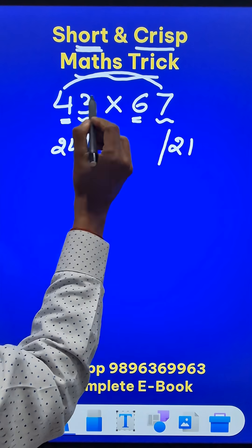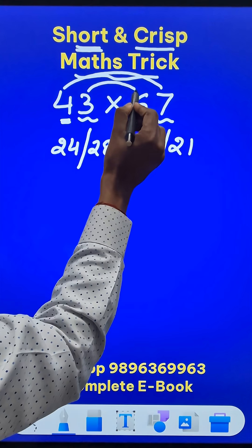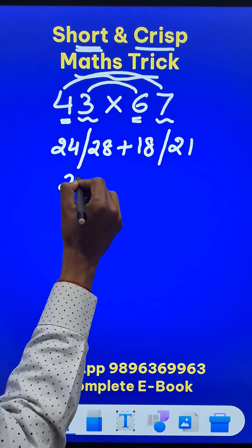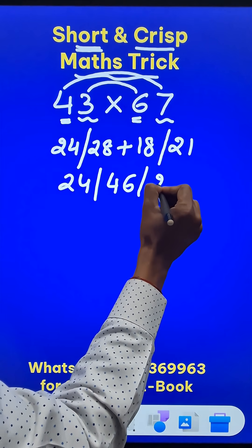The first and the last, four sevens are 28 added to the middle digits 3 times 6 which is 18. Now you get 24, this is 46 and this is 21.